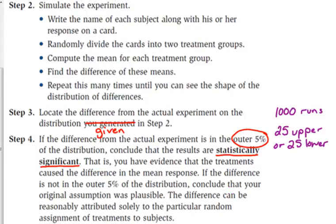And then, step four is the important part. This is how we determine whether the experiment actually did anything. If the treatments actually had an effect, it must be statistically significant. And to be deemed statistically significant, the results have to be in the outer 5%.